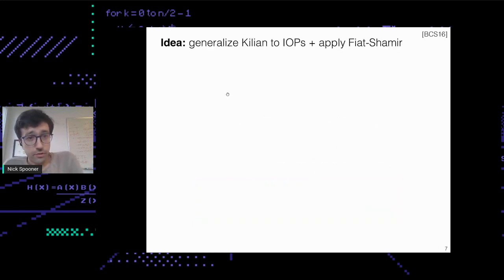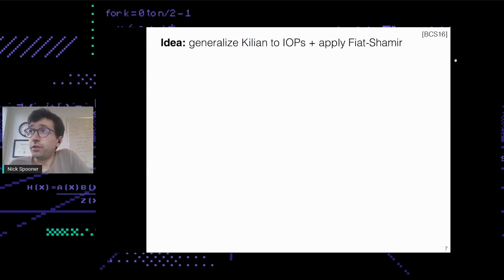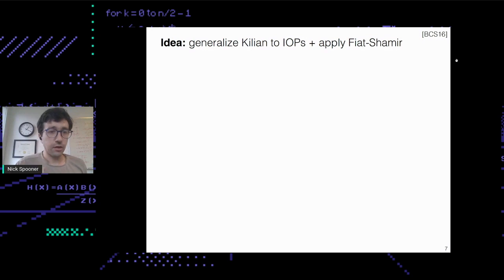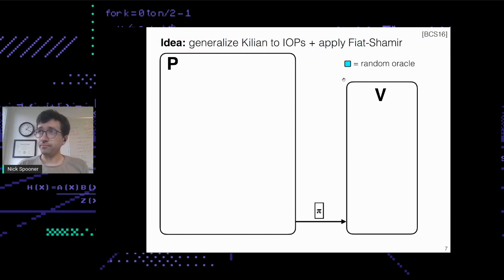The idea is straightforward: you take the Kilian-for-PCPs protocol and generalize it to a Kilian-for-IOPs protocol. You do the same protocol but for many rounds — as many rounds as you have oracle strings. Then you apply Fiat-Shamir to make it non-interactive, so you don't end up paying for the interaction. Let's take a look at what that actually looks like.